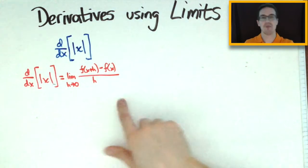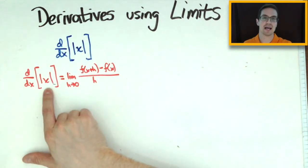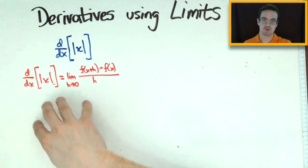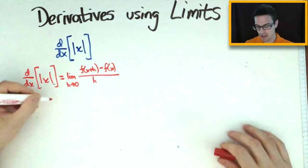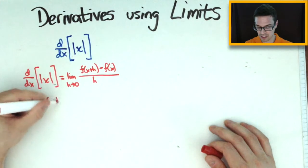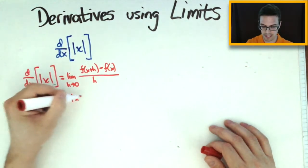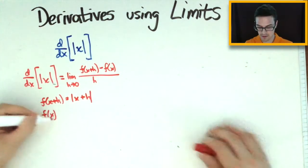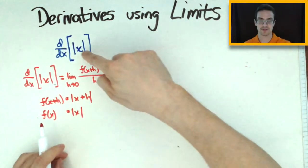I already set up the limit definition of a derivative here, and I have it where it's differentiating the absolute value of x. I'm going to write f(x+h) and f(x) below to stay organized. So f(x+h) is going to be equal to the absolute value of x plus h, and f(x) would just be the absolute value of x.